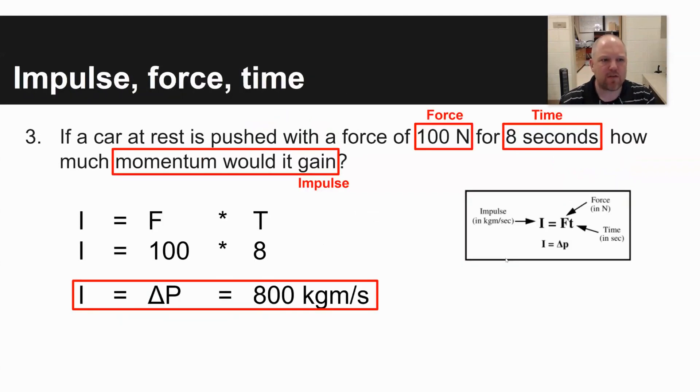The third problem involves impulse, force, and time. It says if a car at rest is pushed with a force of 100 newtons for eight seconds, how much momentum would it gain? Change in momentum is impulse. Force is given to you as 100 newtons times eight seconds. And so you'd want to use the equation impulse equals force times time. Impulse is what you're solving for, force is given as 100 newtons, and then your time is eight seconds. And so impulse or change in momentum would be 800 kilogram meters per second.